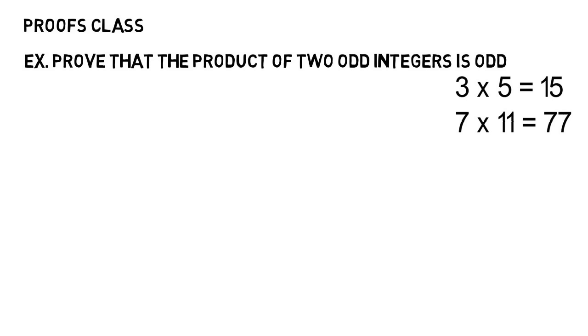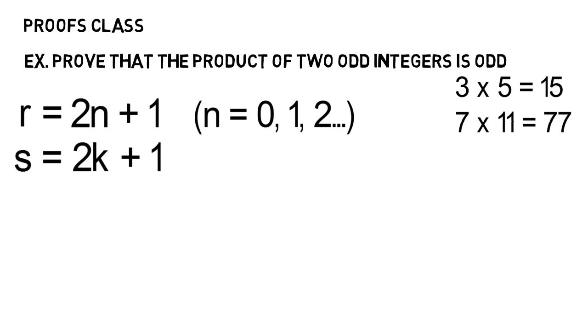Well, an odd number can be written as 2n + 1, where n is any integer like 0, 1, 2, and so on. Plug in any of those for n and you'll get an odd number out. We'll call that first odd number r. Then we can define another odd number, let's say s, as 2k + 1, where k is also an integer. It's the same thing as above, just different letters because it's two different odd numbers.